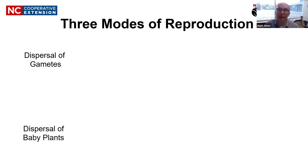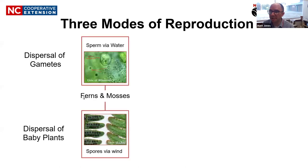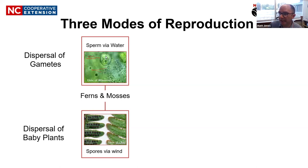A reminder from the first lecture: make sure you're clear about the distinction between how different plants disperse their gametes versus how they disperse their offspring. Plants can't get up and walk around, so they disperse their genes in other ways — by moving around their gametes (their sperm cells) or moving around their offspring. In the case of ferns and mosses, they have swimming sperm that need a thin film of water to swim in, in order to find the archegonia inside the gametophyte of another moss or fern.